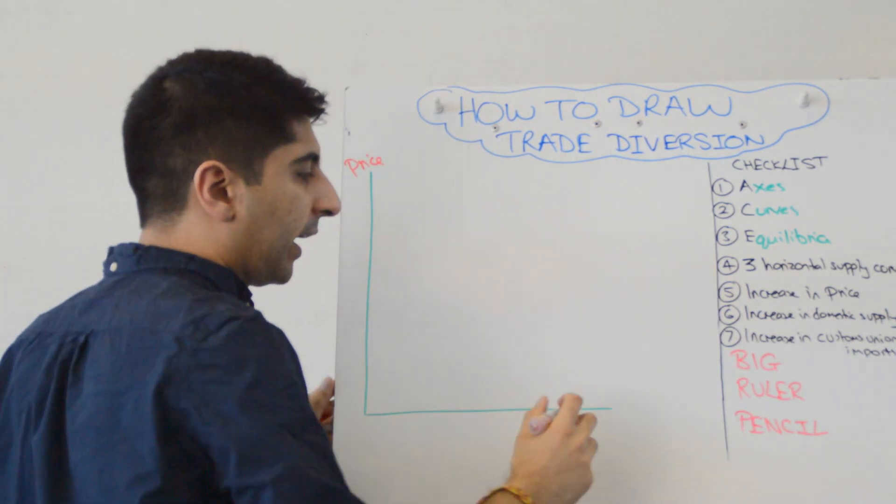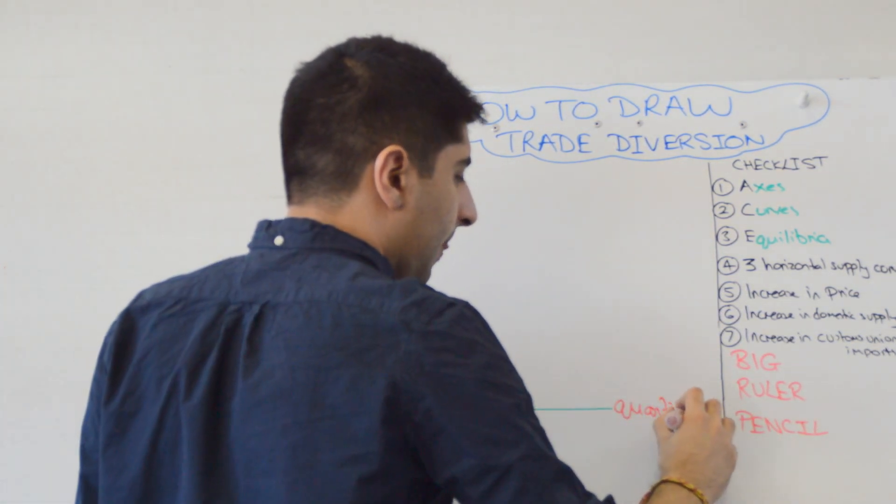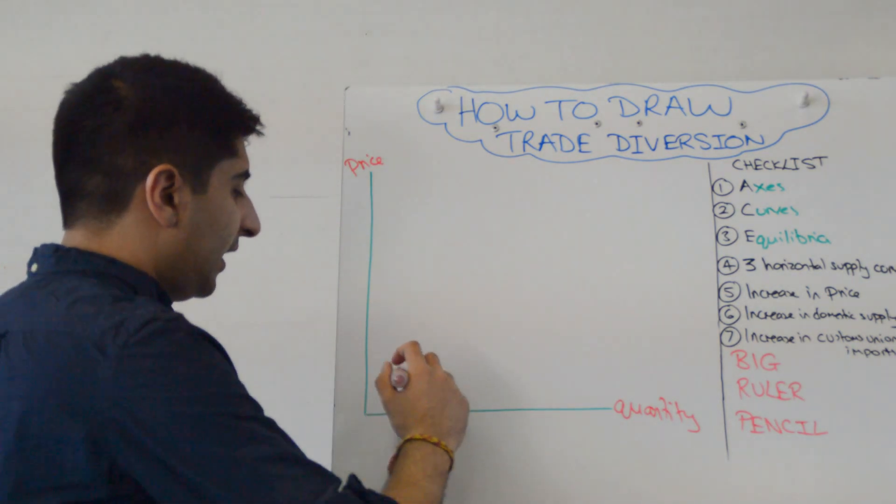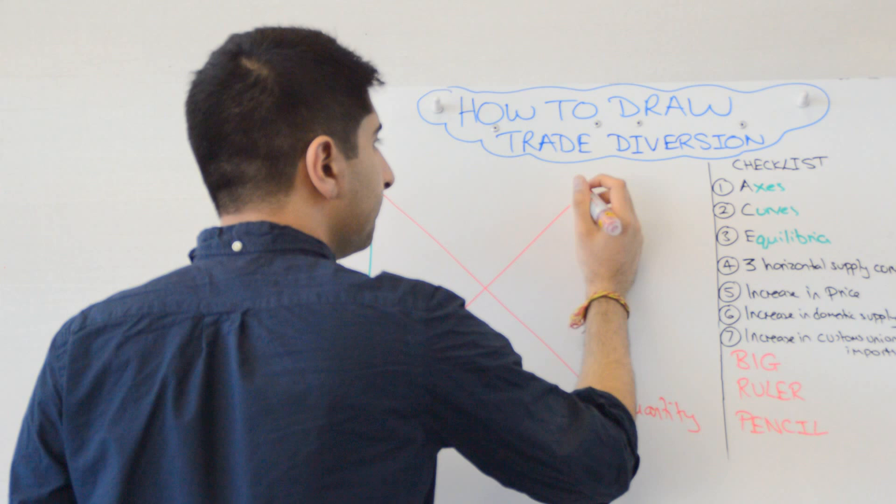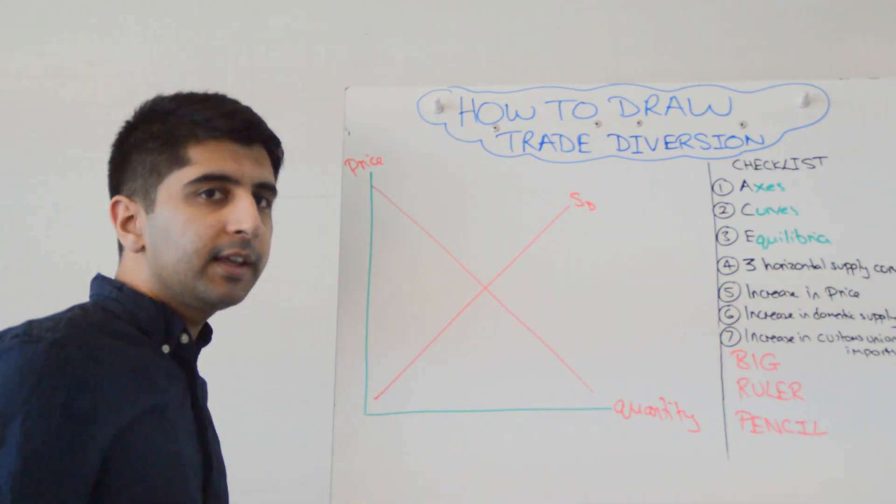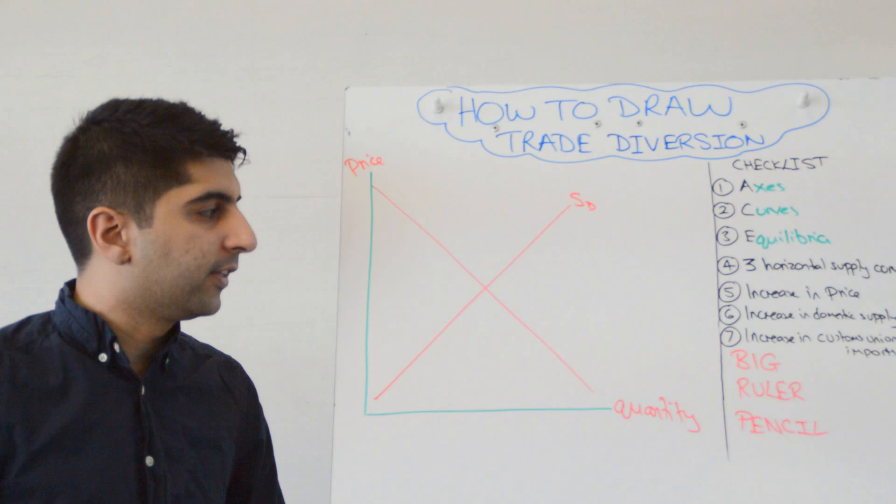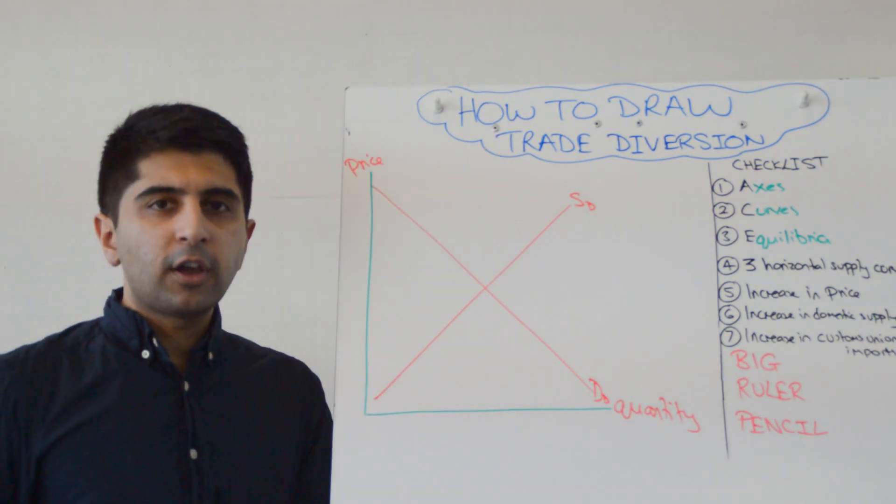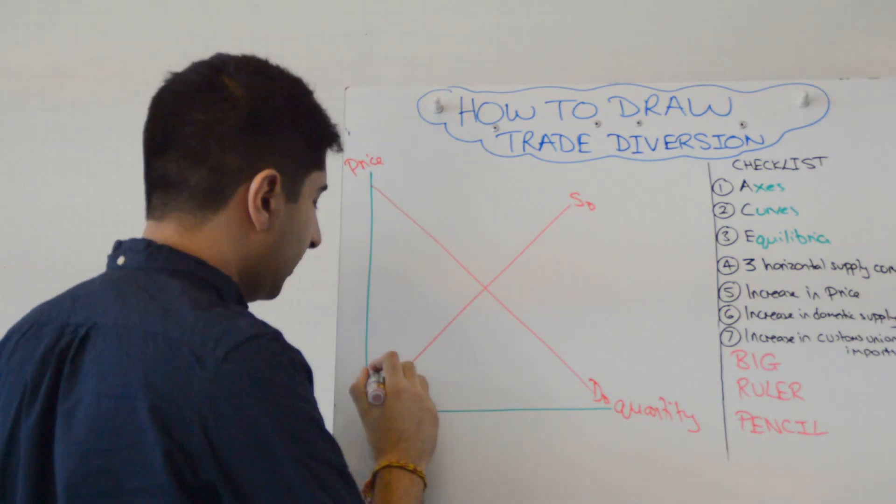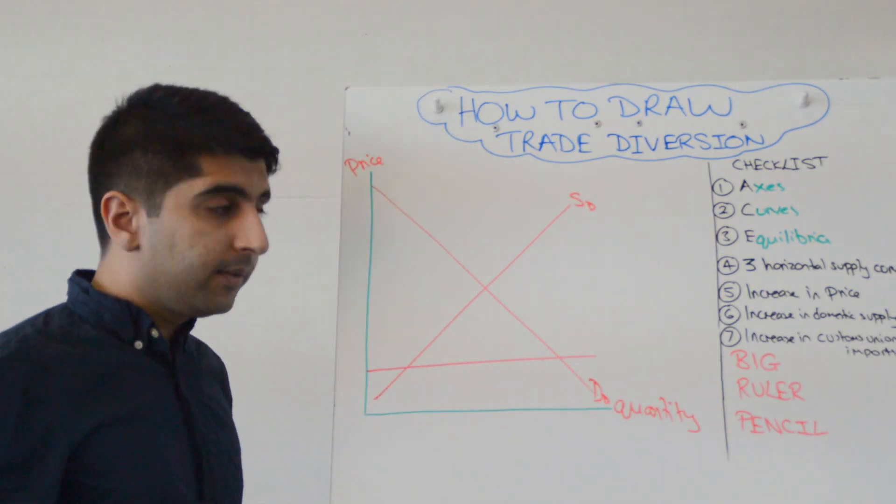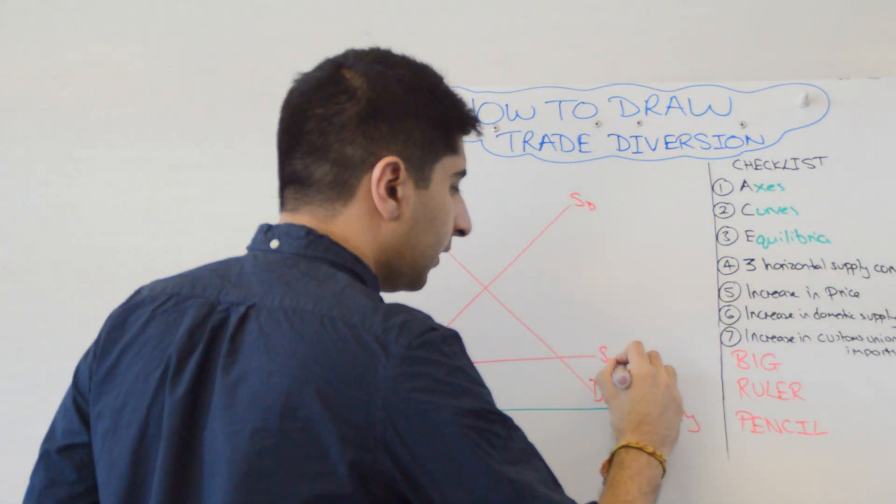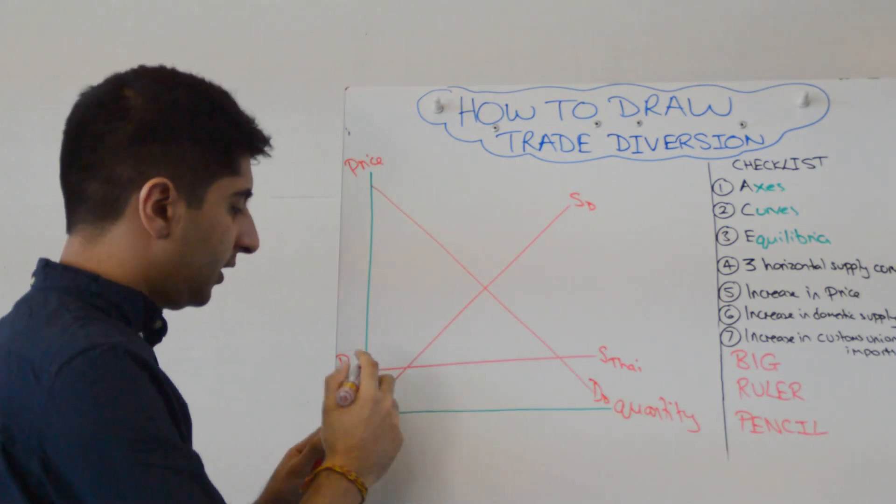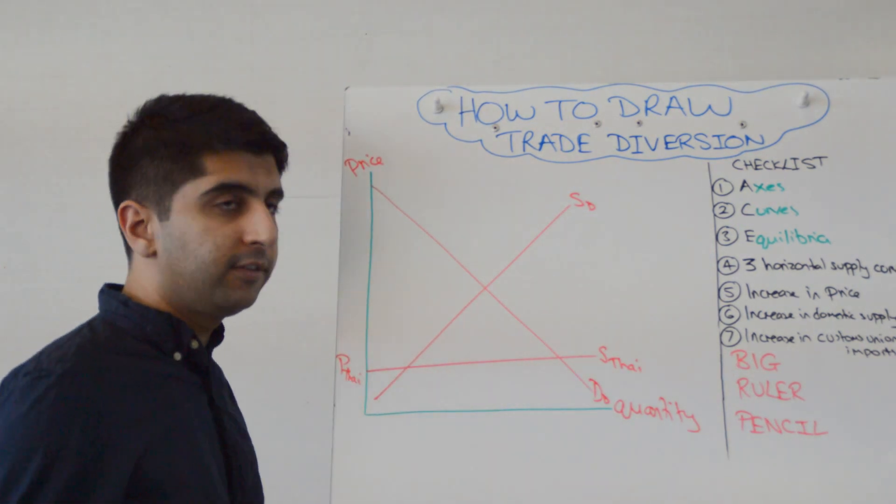So we're going to have price on the y-axis and quantity on the x-axis. Don't forget your labeling of the curves. You do that first. Next, we're going to draw a market here, and we're going to assume that this market is of a domestic country that's currently outside the customs union and domestic demand. This country, let's assume, is trading freely with a country that's outside of the customs unit. So let's call this Thailand. So we have supply Thailand.